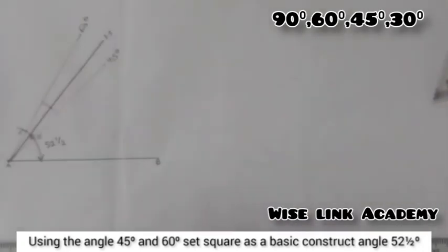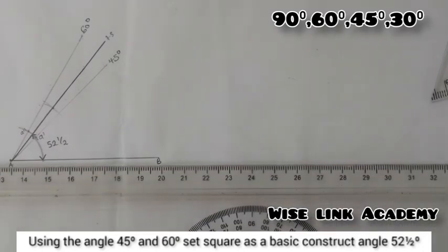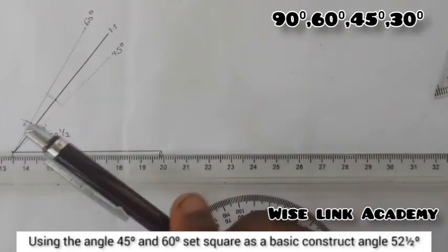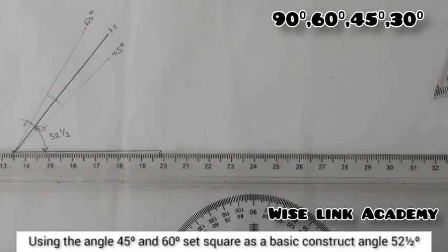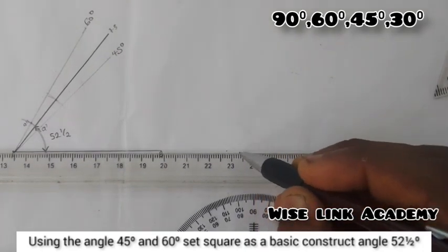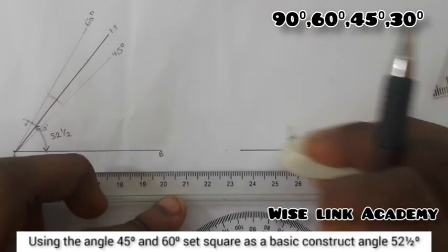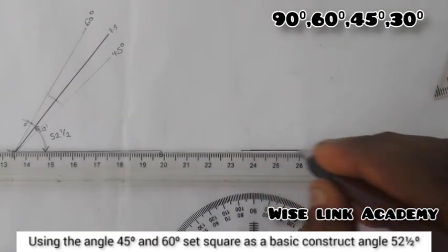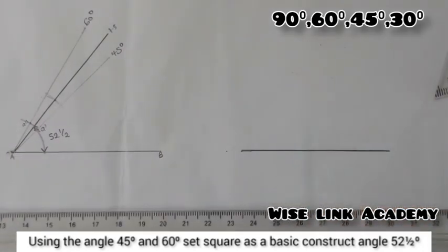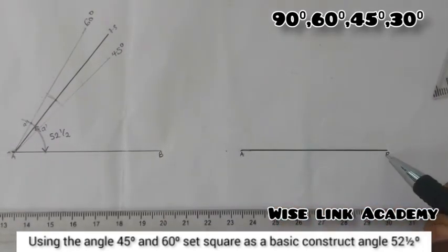These are to construct. Here's the idea. If I'm told to construct this angle using my compass, how do I go about it? I will draw a straight horizontal line this way. This is my point A, my point B.